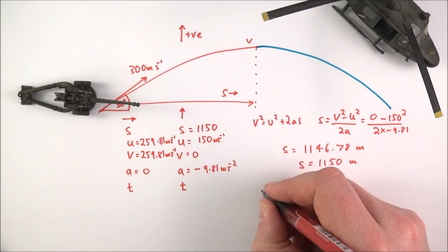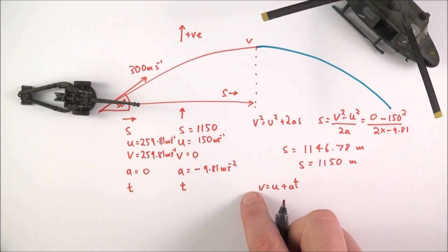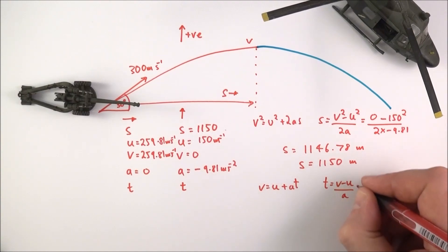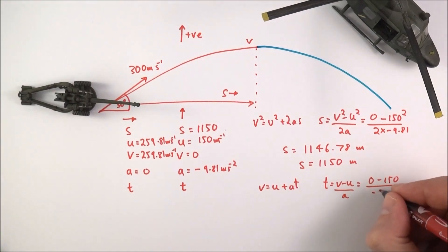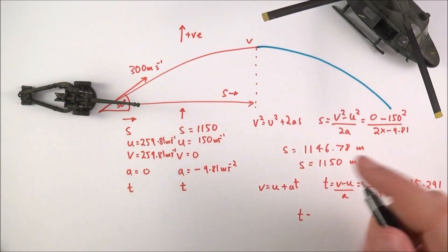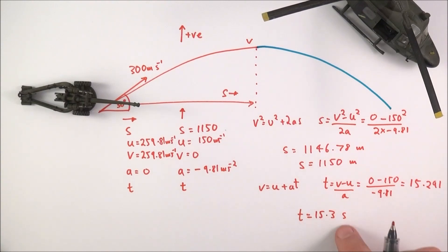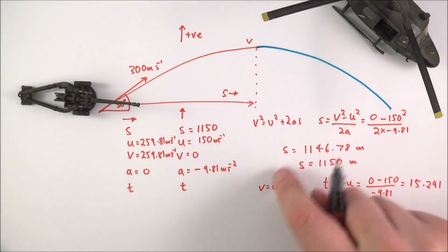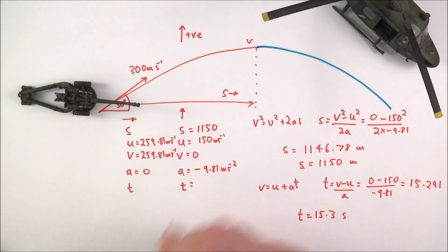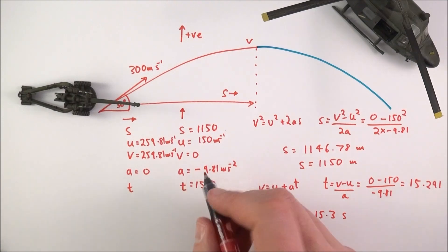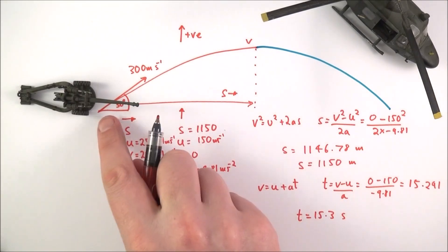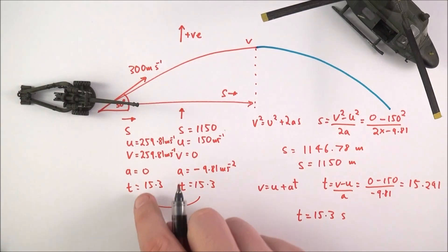How long does it take to get to that height? I can use v equals u plus at. Rearranging to make t the subject, t equals v minus u over a, which equals 0 minus 150 over minus 9.81. The value is 15.291 seconds. The time to get up to that height is about 15.3 seconds. Is that reasonable? Yes, if it's going to 3,000 feet, it's going to take about 15 seconds. That's also the time it takes to go along from this point to this point horizontally, so that's also 15.3.